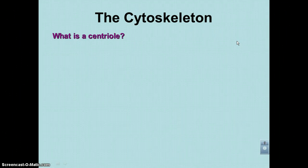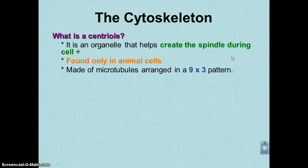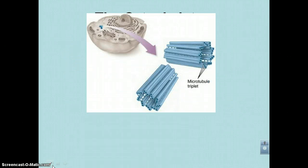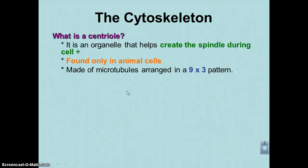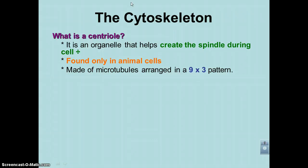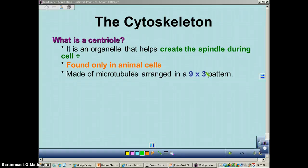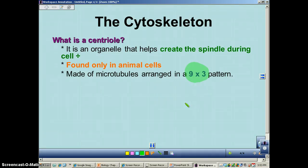Things related to the cytoskeleton would be a centriole. A centriole is an organelle that's going to help create the mitotic spindle, often referred to as the spindle during cell division. These guys are found only in animal cells — you will not find a centriole in a plant cell. One thing you want to remember is the nine-by-three pattern, which is the arrangement of microtubules in a centriole, and you're going to compare that with the arrangement in cilia and flagella.